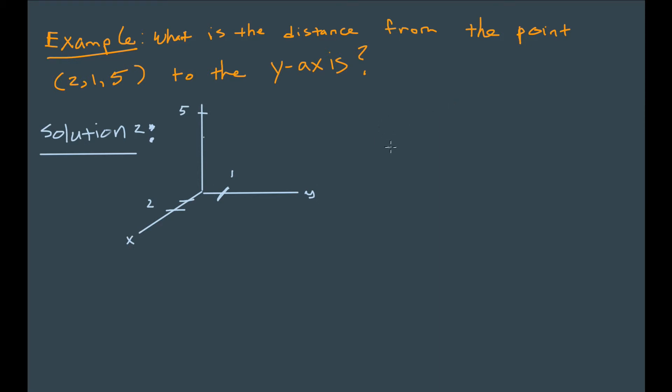Alright, so our second approach to this problem is going to be, let's again plot the point 2,1,5. And our second approach to this problem is going to say, what is the closest point on the y-axis to our point 2,1,5? So the closest point on the y-axis.